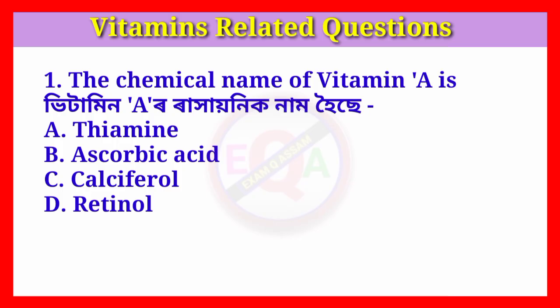Question number one: The chemical name of vitamin A is? Answer: Option D, retinol.